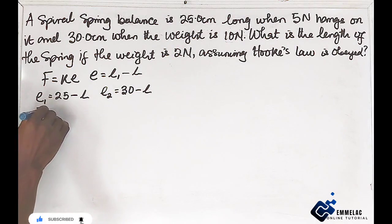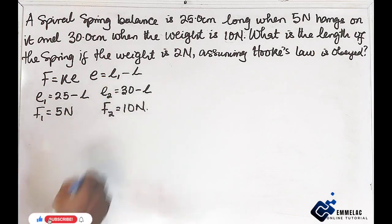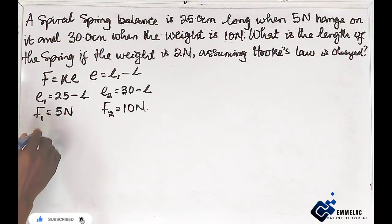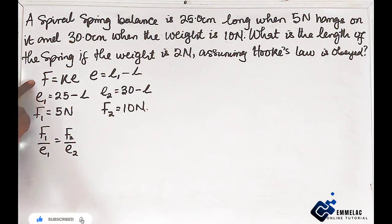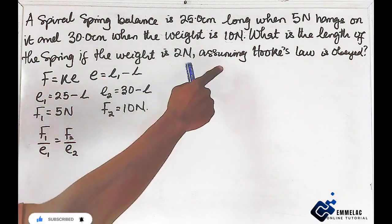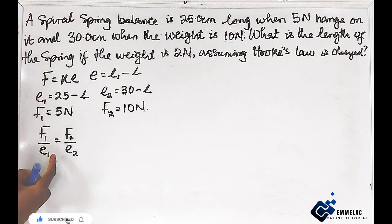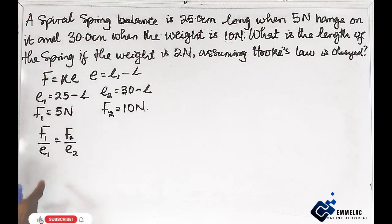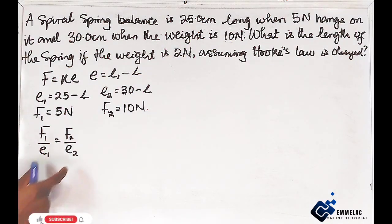Take note that force F1 is 5 Newton and the second force F2 is 10 Newton. We can now employ the rule F1 over E1 equals F2 over E2. This is because the same spring is used throughout the experiment, so it has the same elasticity constant, making it a ratio and proportion problem.